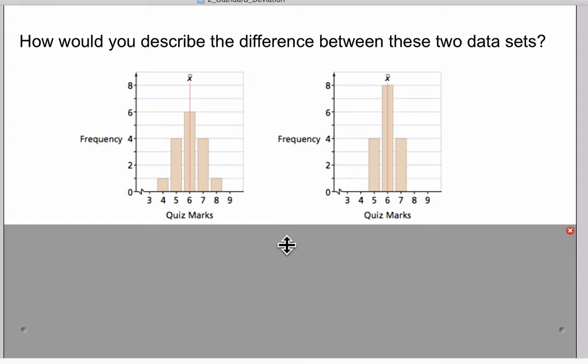If we're given these two data sets and you're asked to describe the difference between the two data sets, you might want to look at such things as mean. First of all, we see that we have a mean of six on this quiz, and on this quiz we have a mean of six as well.